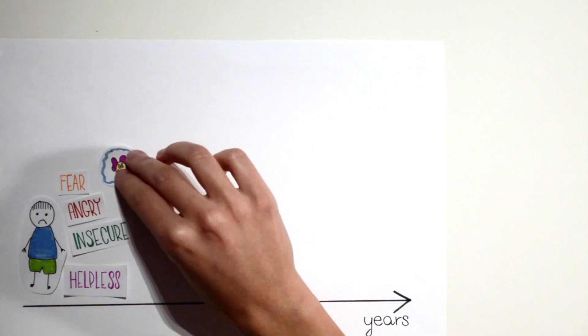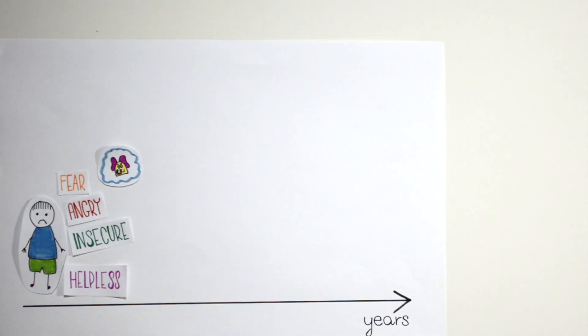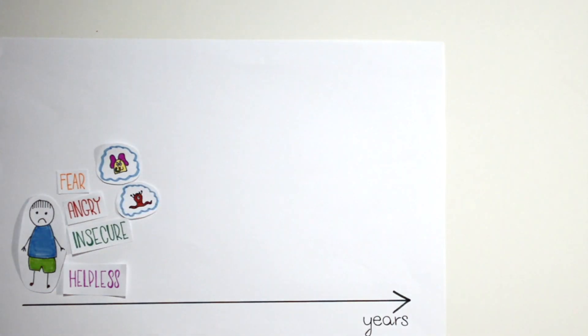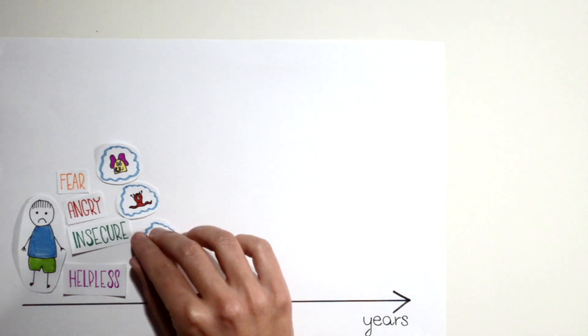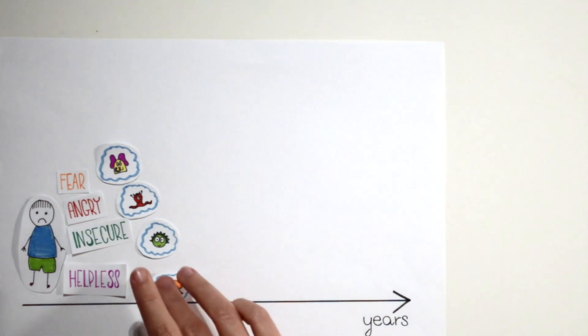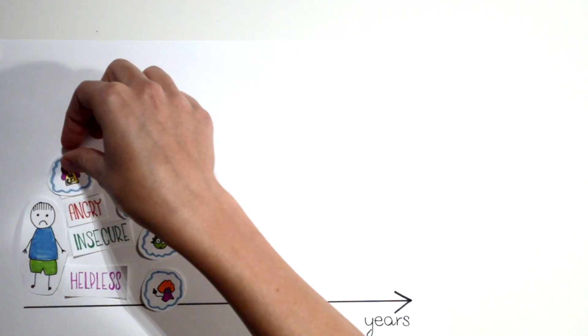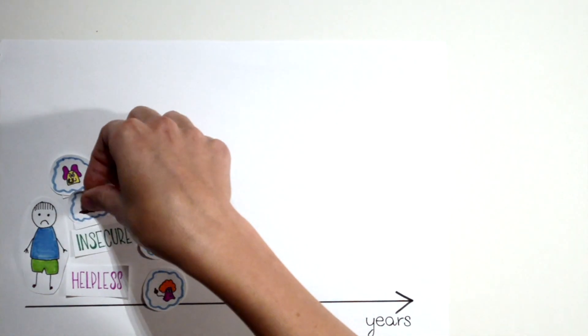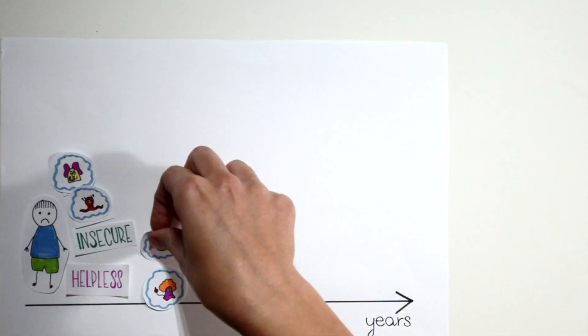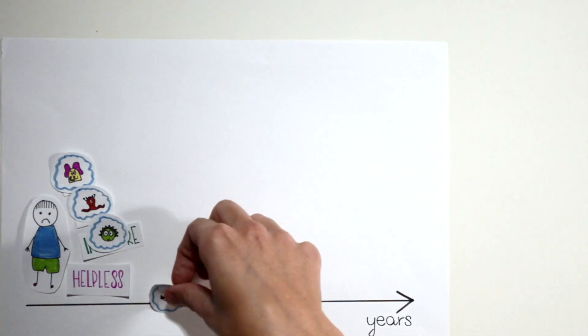Jacob has an imaginary companion to help him with his fear, one to overcome anger, another to deal with insecurity, and so on. In the situations where this emotion emerges, the imaginary companion associated with that particular emotion enters the scene and takes charge of that feeling.